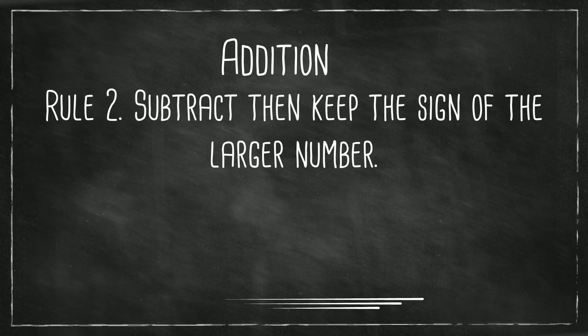Now different signs. You subtract, then keep the sign of the larger number. So we have 6 plus a negative 2, that's going to be 4. You subtract and 6 is larger than 2, so it will be positive.